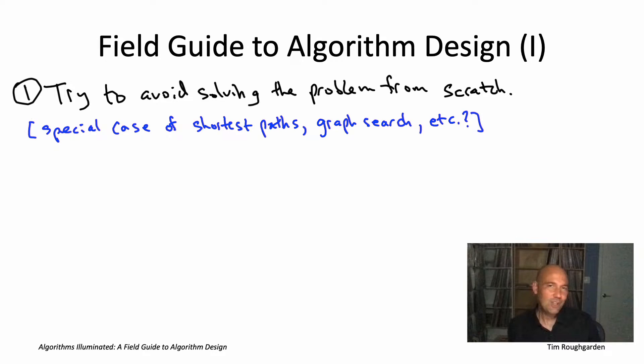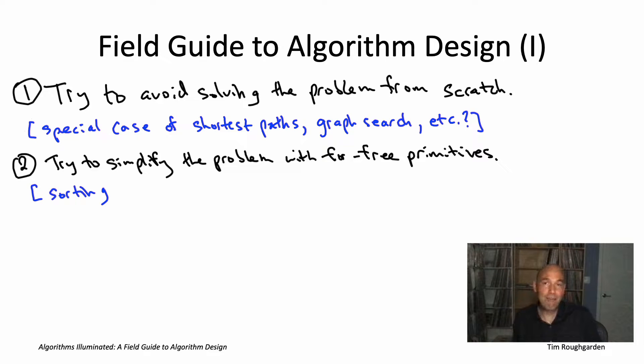So if that first step fails, we have to work a little bit harder, but we still want to err on the side of being as lazy as possible and just using our off-the-shelf tools as much as we can. So the next thing to consider is the array of for-free primitives that we've studied in this book series. These are subroutines that run in linear or near-linear time, so the amount of time is barely more than what you need to read the input anyways. And if a for-free primitive has the potential to simplify the problem you're looking at, why not just apply it? So if you have an array, maybe it helps to sort the array first. If you have a graph, maybe it helps to compute the connected components of the graph first.